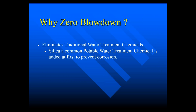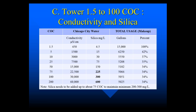Zero blowdown eliminates traditional water treatment chemicals and silica is a common potable water treatment. It is added initially when transferring from a traditional treatment program to the zero blowdown program. Silica is added to prevent corrosion. In Chicago city water, there's about 3 milligrams per liter silica, so to get to the recommended level of 200 to 300 mg/L silica just by cycling up, you don't get there until you're at 75 cycles of concentration — so in the lower range you'd have to add additional silica to reach recommended levels.